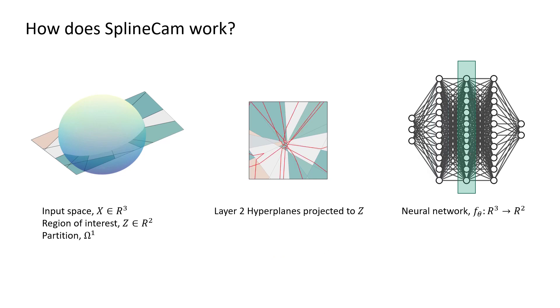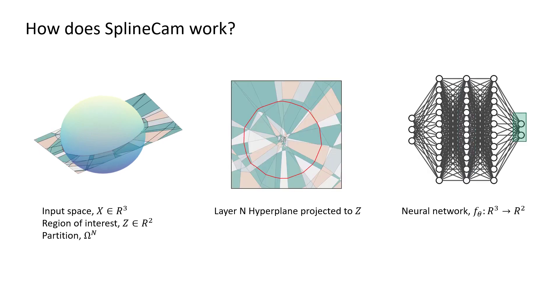Since the operations are per-region affine, we can now back-project the layer 2 hyperplanes onto Z, which are denoted here in red. By this way, we can compute the hyperplane projections and affine parameters in a layer-wise fashion, and analytically compute the partition induced by the neural network on our region of interest Z.